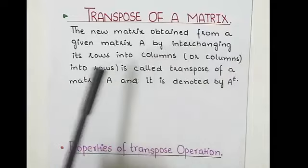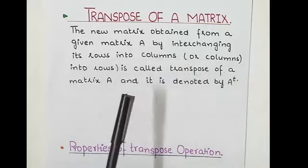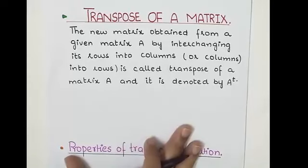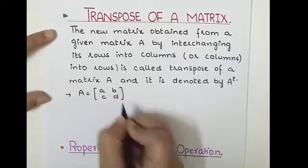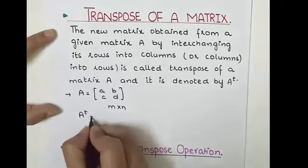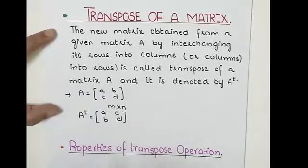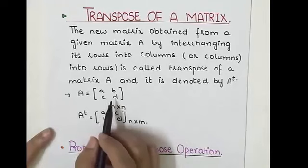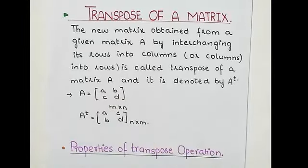The new matrix obtained from a given matrix A by interchanging its rows into columns or columns into rows is called the transpose of matrix A, denoted by A^T. If A is a matrix of order M×N, then when we take the transpose, the order of the new matrix becomes N×M. And if A is a square matrix of order N, then A^T is also a square matrix of order N.